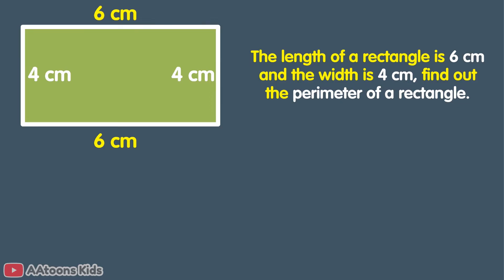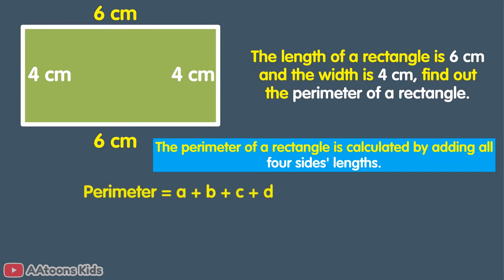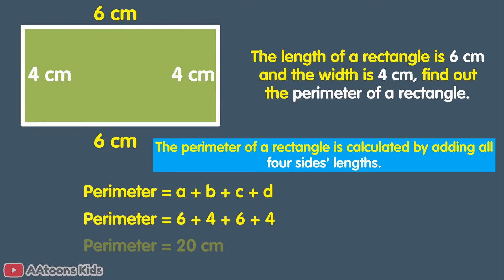First, we will use the adding-all-four-sides method. Side A: 6 cm, Side B: 4 cm, Side C: 6 cm, Side D: 4 cm. The addition of 6 + 4 + 6 + 4 is 20. So the perimeter of the rectangle is 20 cm.